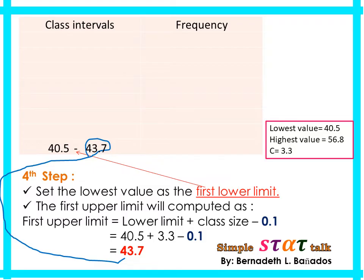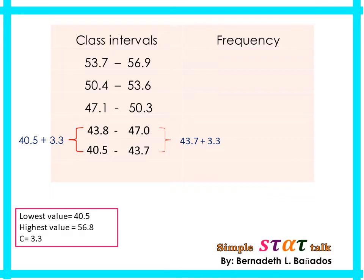Next, obtain the second interval using the class size C. To get the second lower limit, add 40.5 + 3.3 = 43.8. For the second upper limit, add 43.7 + 3.3. We then repeat the process until we reach the class interval that contains the highest value.